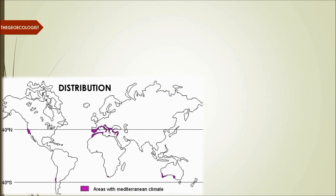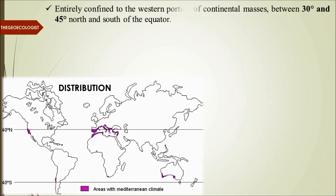Let's understand the distribution first. In the world distribution, this biome is entirely confined between 30 degrees north to 45 degrees north and south of the equator. So largely it is away from the tropics — 30 to 45 degrees north and south of the equator is its major distribution in the world.